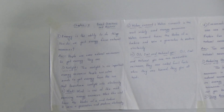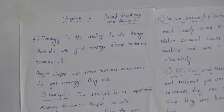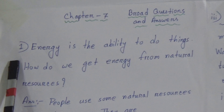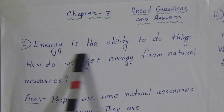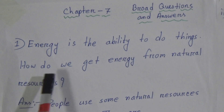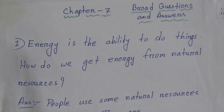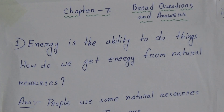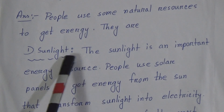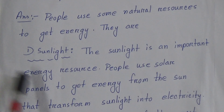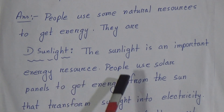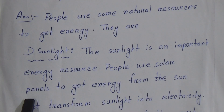Students, you can see I have written here 3 broad questions and answers. Broad question number 1: Energy is the ability to do things. How do we get energy from natural resources? Answer: People use some natural resources to get energy. Sunlight is an important energy resource. People use solar panels to get energy from the sun. Solar panels transform sunlight into electricity.